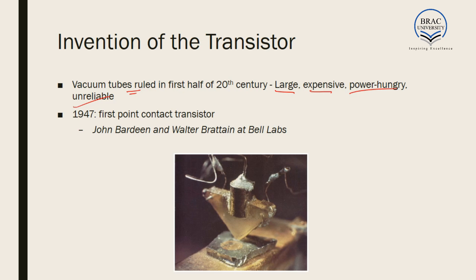In order to replace the vacuum tubes, in 1947 the first transistor was made in Bell Labs. John Bardeen and Walter Brattain made the first transistor, and from then onwards the manufacture of transistors and research oriented around transistors increased by a great margin.